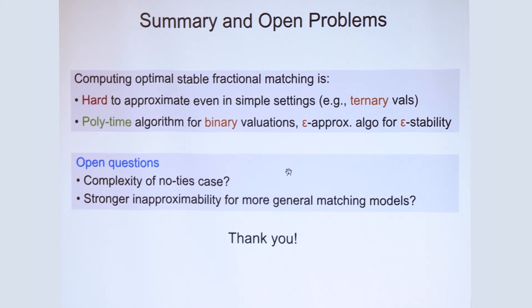Fractional matchings are like the natural model for randomization. So what I described to you is like an ex-ante notion of stability. So we have some other results in the paper that I did not talk about, which is that these matchings are not ex-post stable, so they can have unstable matchings in the support. And in fact, there's a very strong negative result saying that some stable matchings can only have unstable support. So there's some interesting computational implications as well.